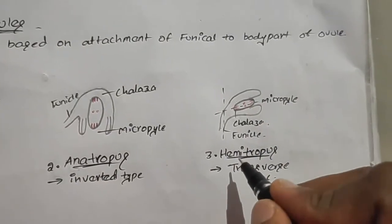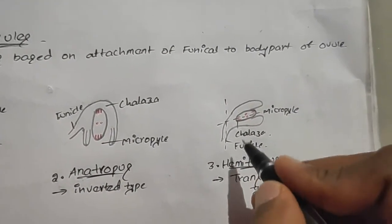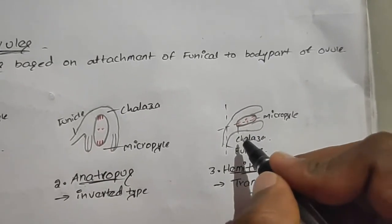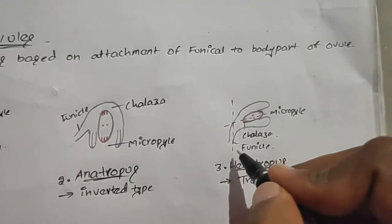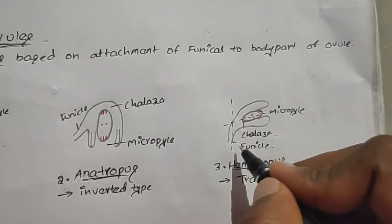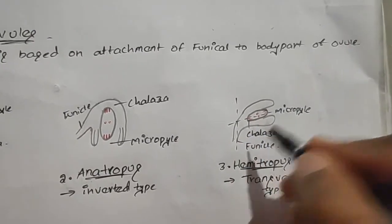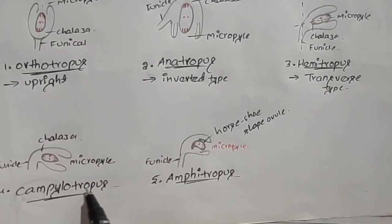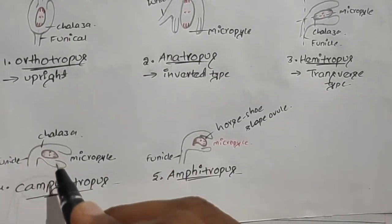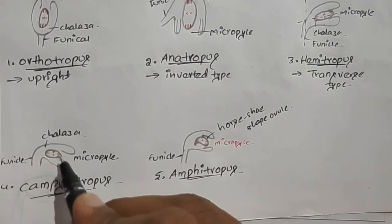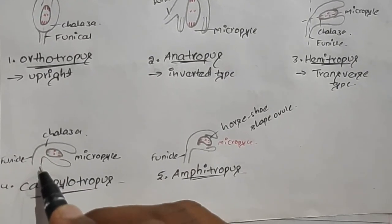The next type is hemitropous, which is a transverse type. In this type, the funicle, micropyle end, and chalaza end are at exactly 90 degrees to the funicle. Another type is campylotropous. In this type, similar to hemitropous, the chalaza and micropyle end is bent more than 90 degrees to the funicle.